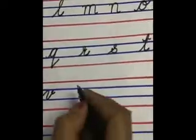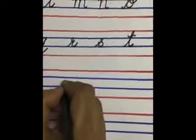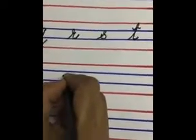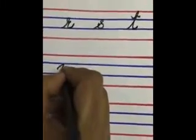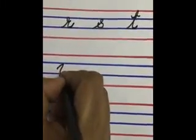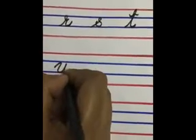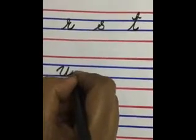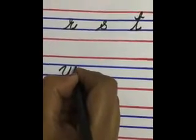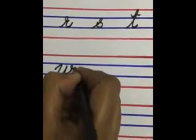Now again from the middle of the second line, you will touch the third line, again touch the third line and finish it like this. This is small letter W.